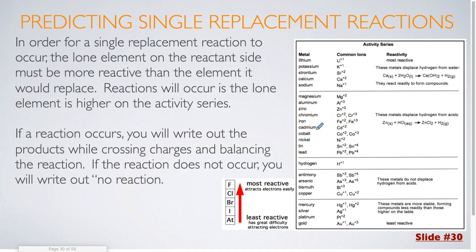I have pictures of both over here. The one on the right is the activity series for metals. Metals that are most reactive will be at the top, metals that are less reactive will be at the bottom. The same is true for the nonmetal activity series, which is much shorter. Fluorine is our most reactive, and then the reactivity decreases as we go down.